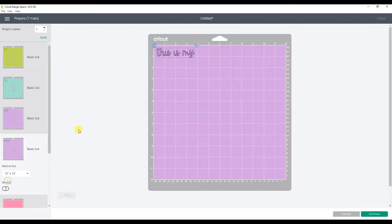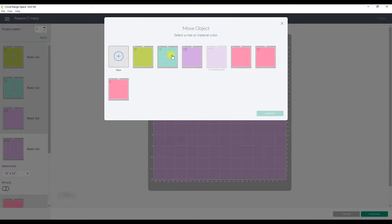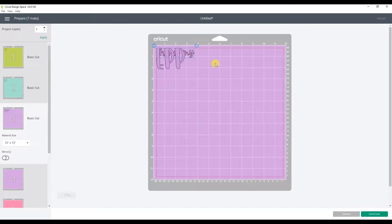To do that, you will go to the mat you want to move, click on the design and click the three little dots on the top of the design. Then you will select move object and pick the mat you want to move it to. Since this part of the design is going to be purple, I will select the other purple mat to move it to just to keep track of all of the colors. Once it's on the new mat, move it over so that none of the cuts will overlap.